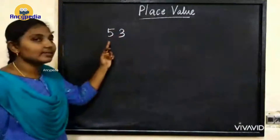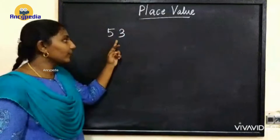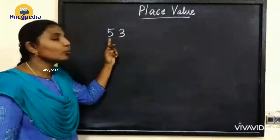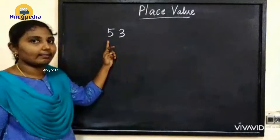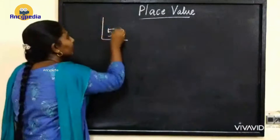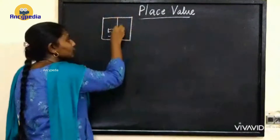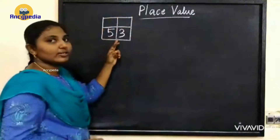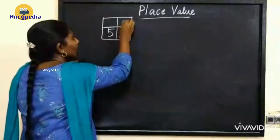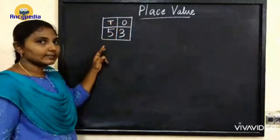You see this is a two digit number. Now we are going to write the place value of the two digits in the number. First we have to split the number into two parts and mention their places: 1's place and 10's place.